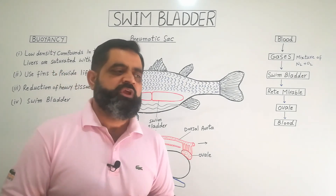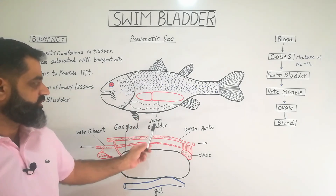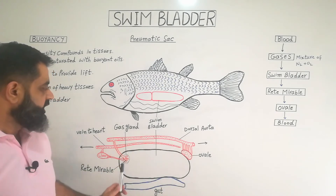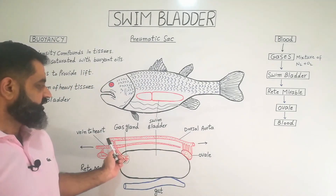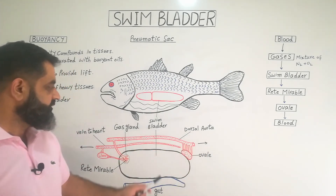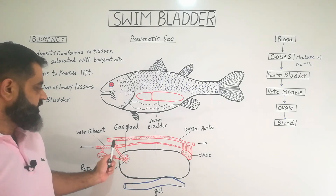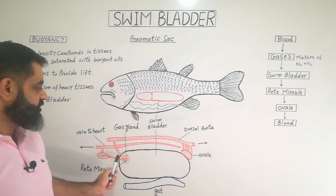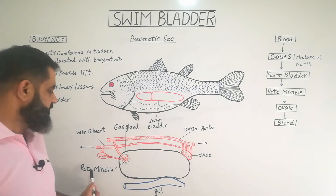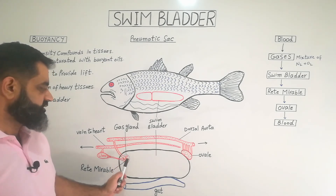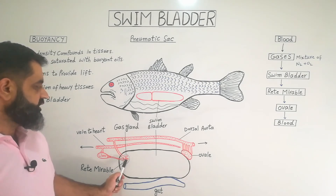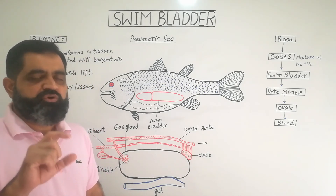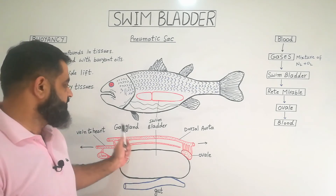Later on, fish changed their strategy to a different mechanism to fill gas in the swim bladder. Looking at the detailed structure: the swim bladder is supplied with rich capillaries of blood vessels. The dorsal aorta comes from the heart and carries blood toward the back side. Blood vessels — veins and arteries — reach toward the swim bladder, where they divide and subdivide to form a network known as the rete mirabile. The rete mirabile is a network of capillaries attached to the surface of the swim bladder. The structure where capillaries attach to the swim bladder is known as the gas gland, because this organ is involved in the production and filling of gases into the swim bladder.